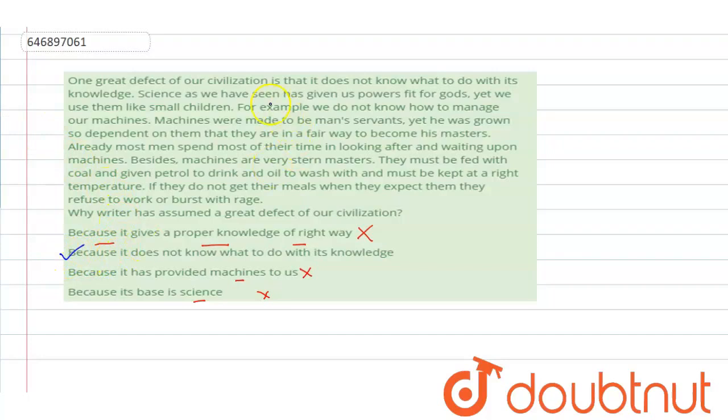Which is given in the first line itself. Because it does not know what to do with its knowledge. So, this is a great drawback of civilization.